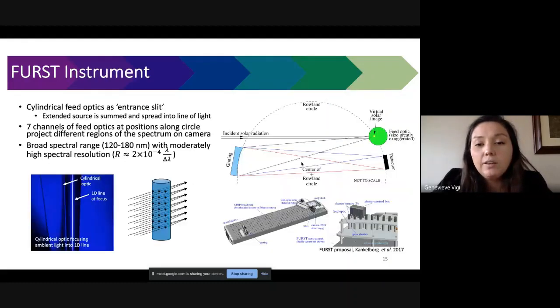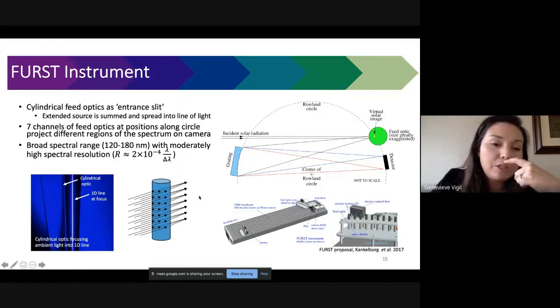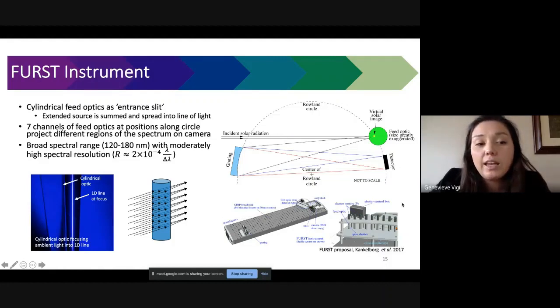Of course that has a lot of interesting challenges, but the way that FIRST proposes to do this is to basically replace an entrance slit of a typical spectrometer and replace that with a cylindrical feed optic. At this point we will have this cylindrical feed optic which will collect light from the entire solar disk and focus it onto a single 1D line and that's kind of our new slit. Each of those feed optics, we'll have about seven of them placed at different positions along the Rowland circle relative to this diffraction grating, and then we will sequentially shutter open and close these different feed optics so that we can get access to different parts of the spectrum from about 120 to 180 nanometers. This will provide us with relatively high spectral resolution of a UV spectra.